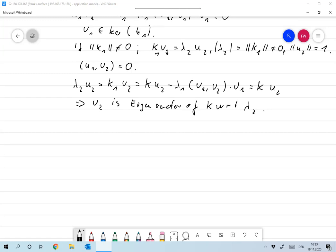Now since λ₁ was the largest by absolute value, the largest eigenvalue of k, we already have that λ₁ is greater or equal to λ₂.